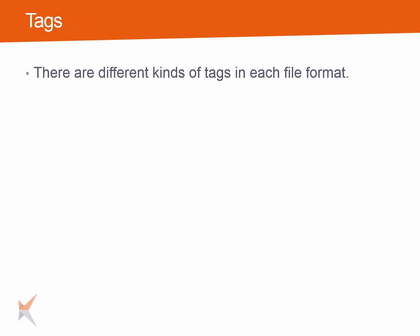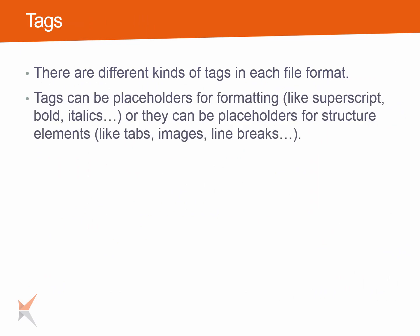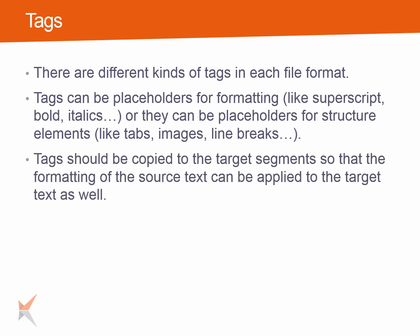There are different kinds of tags for each file format. Tags can be placeholders for formatting like superscript, bold, italics, or they can be placeholders for structure elements like tabs, images or line breaks. Tags should be copied to the target segments so that the formatting of the source text can be applied to the target text as well.